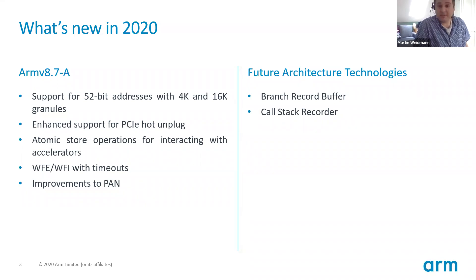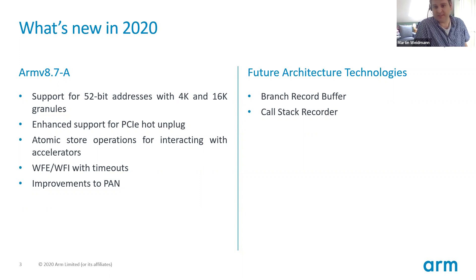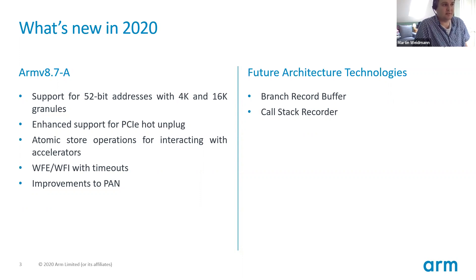In previous talks we've also introduced the idea of Future Architecture Technologies, or FAT. This is as yet unreleased versions of the architecture, but we use this program to give advanced access to features we will add in future versions. We're also this year announcing two features as part of that FAT program: branch record buffer and call stack recorder.